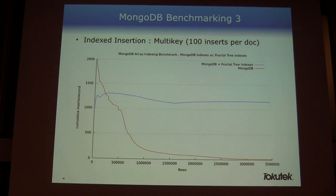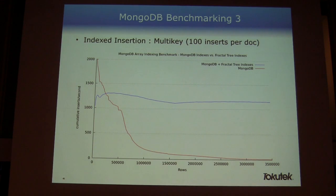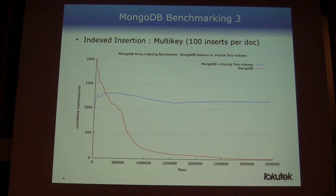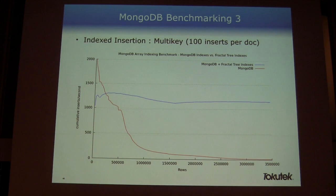Benchmark 3 tests Mongo's multi-key index: a field stored as an array of 100 elements, which when indexed creates a multi-key insert. The same insertion benchmark from the first example, but instead of one value per field there are 100 values. The trend with TokuDB is to maintain a level of performance. The Mongo line dropped to about one and a half inserts per second at 35 million document insertions. This shows that when you're doing 100x the amount of indexing, fractal tree indexing strength can really affect your insertion workload with other technologies.